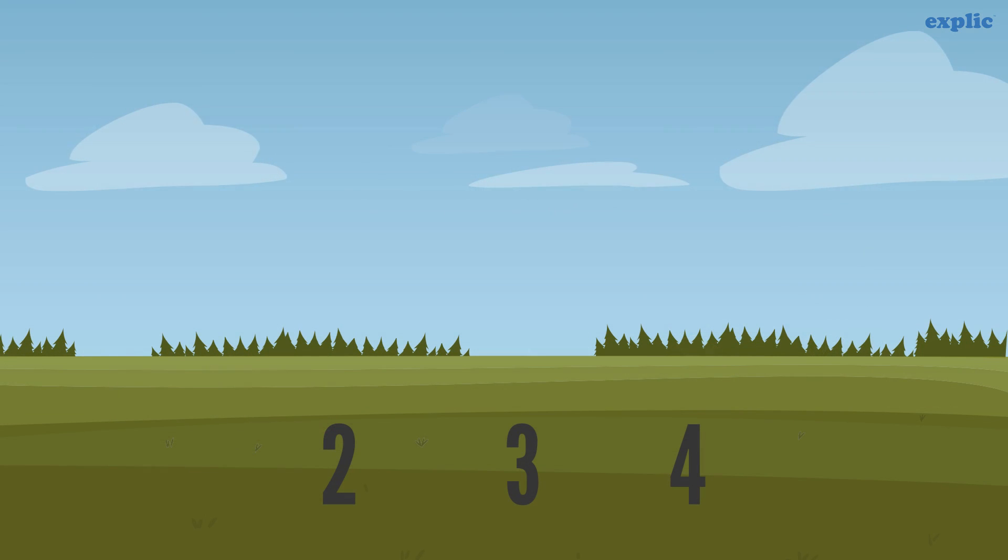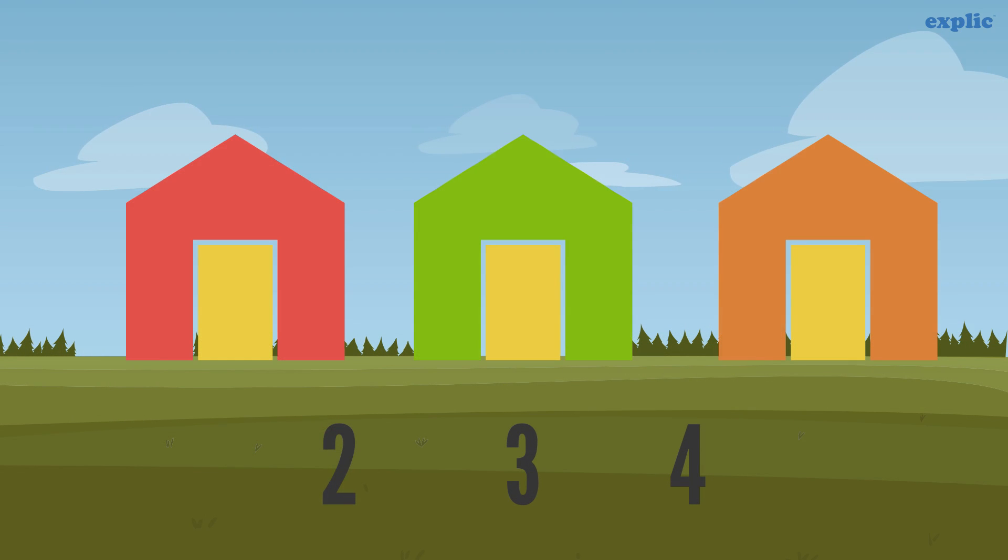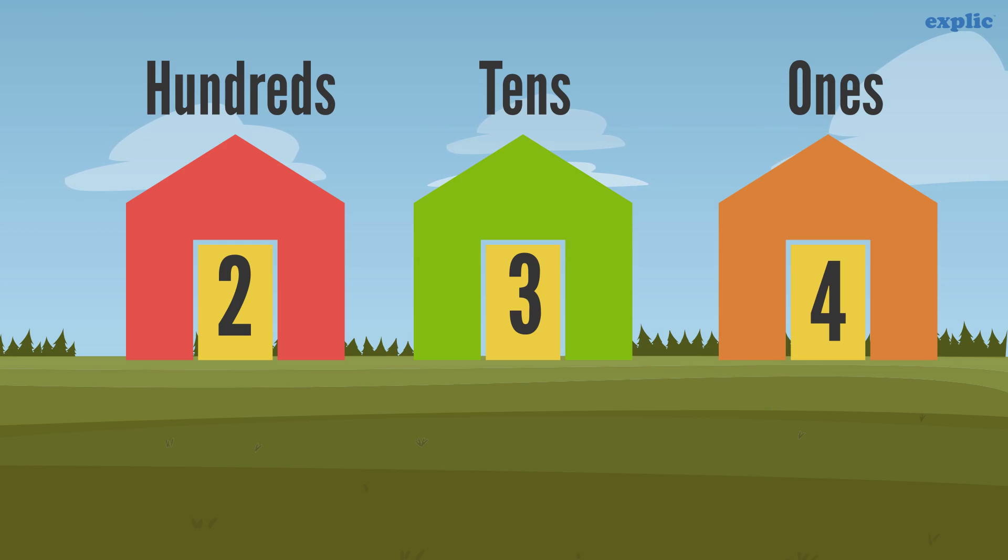Let's take the example of number 234. Consider that each digit of the number belongs to a different house and those houses are called ones, tens and hundreds.